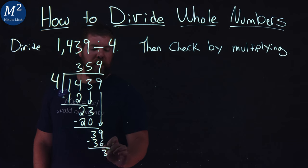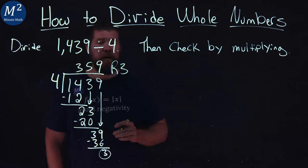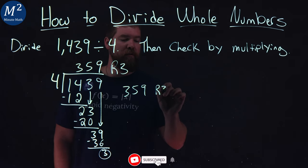So that 3 is what we call our remainder. Remainder 3. This one doesn't go in evenly. Our answer is 359 with a remainder of 3.